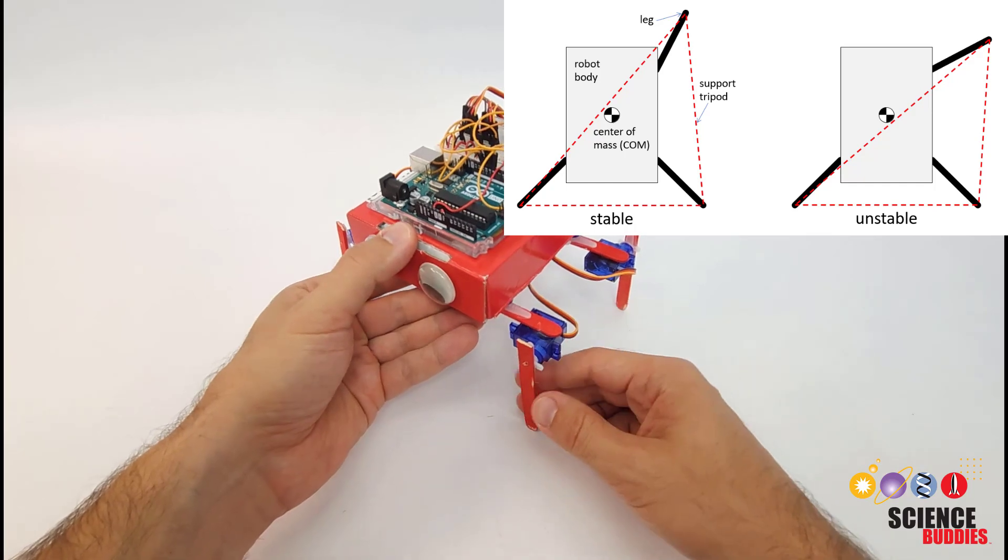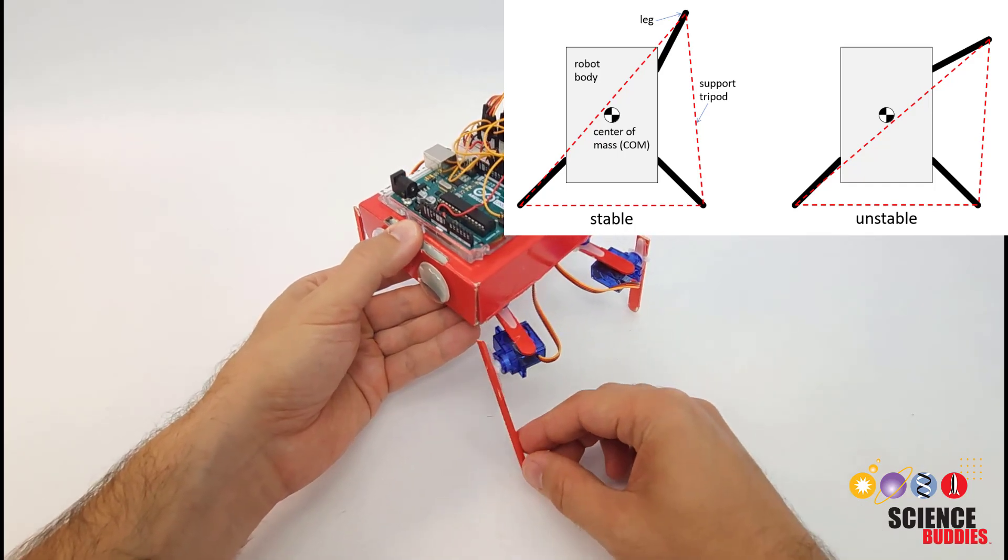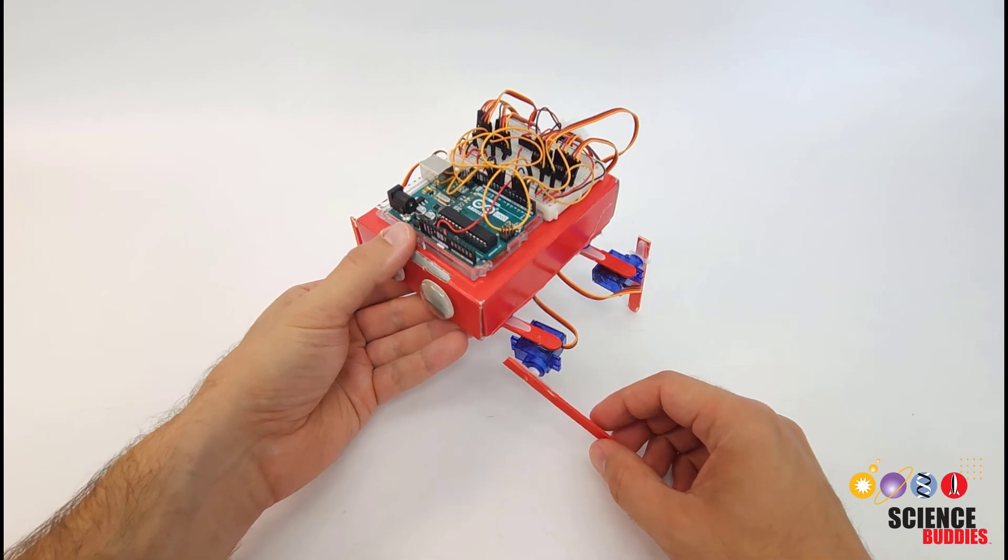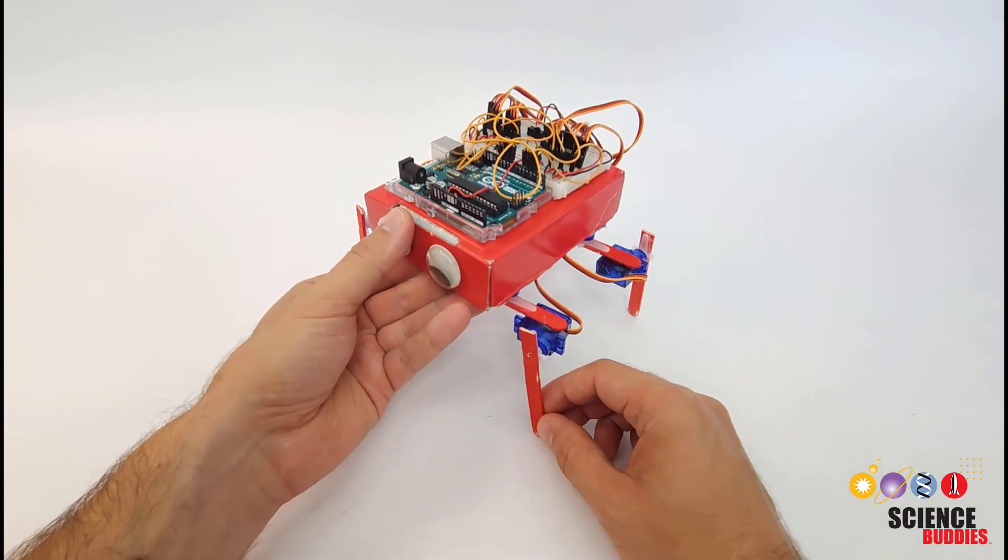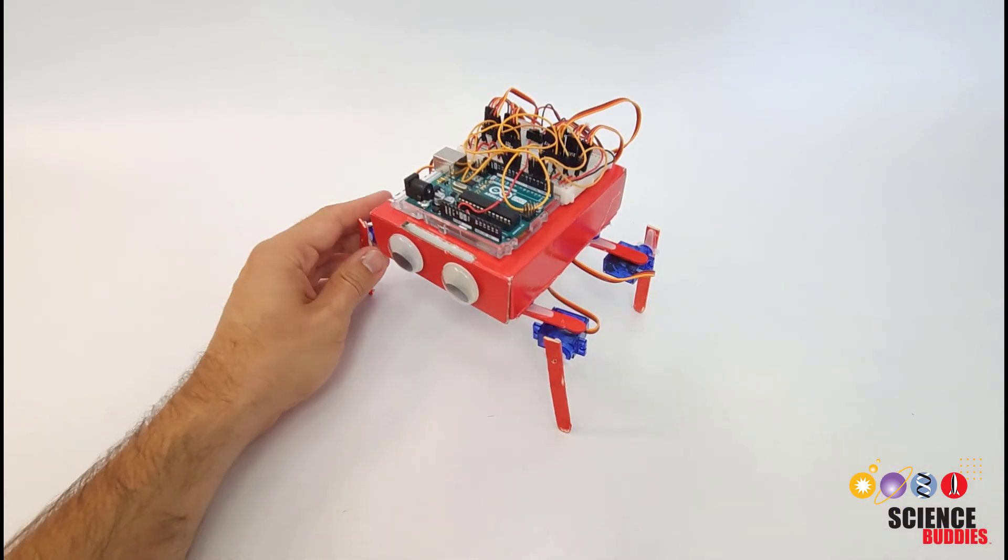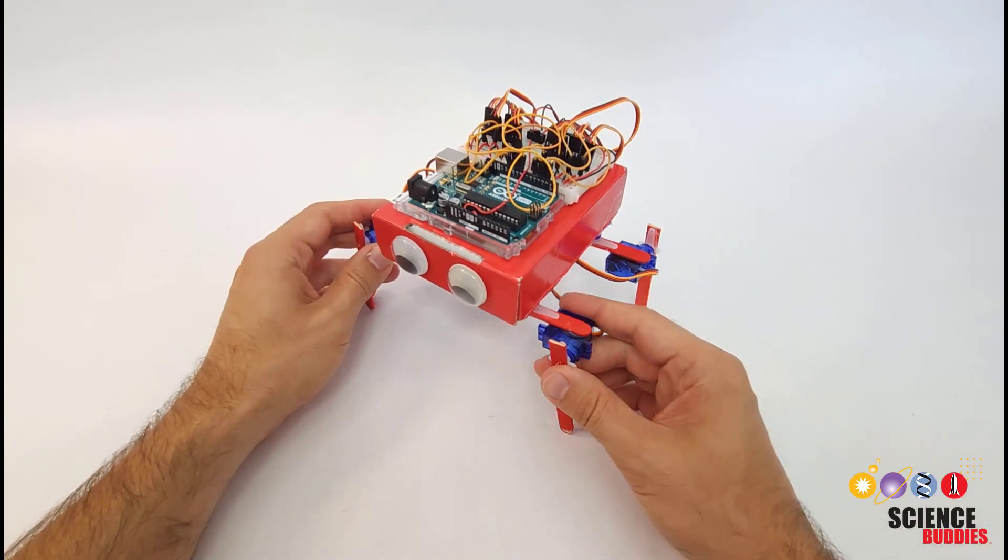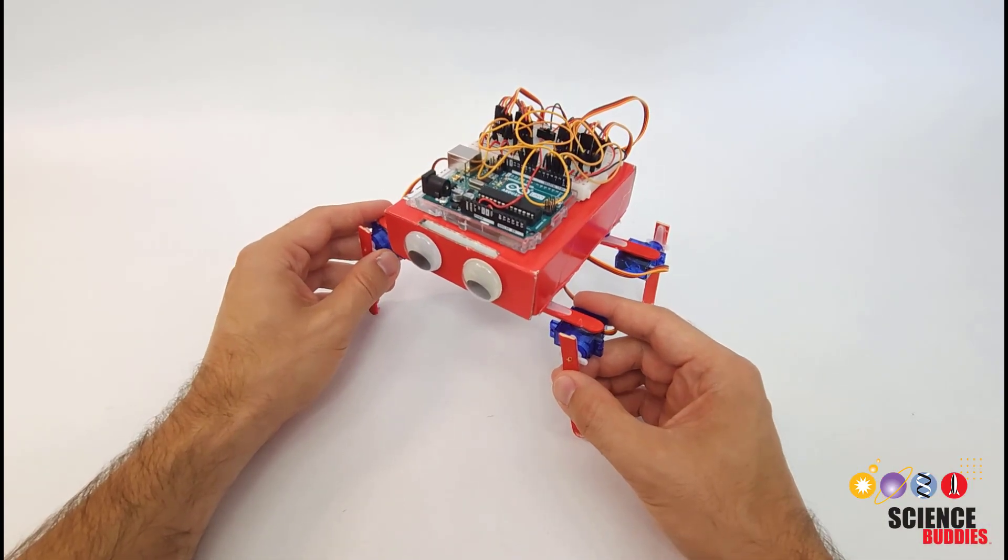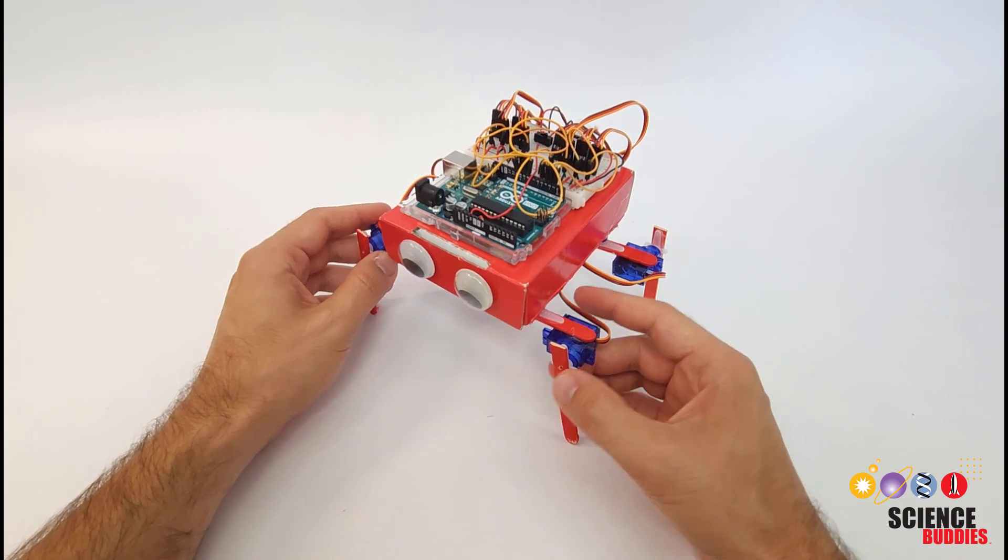You might remember seeing earlier that my robot tended to sort of drag its feet along the ground, it wasn't successfully lifting them completely off the ground without falling but it was still going forward so that's one of the challenges of this project is figuring out the best gait for your robot and what's going to make it walk the fastest.